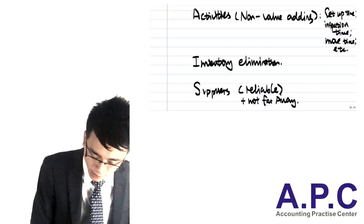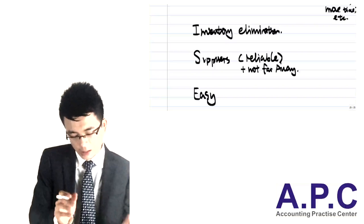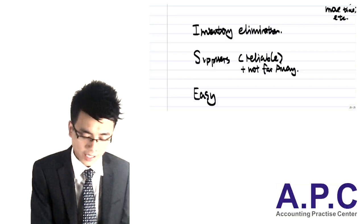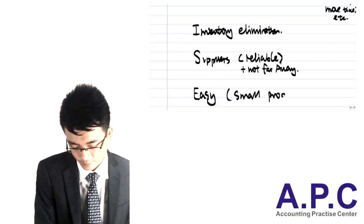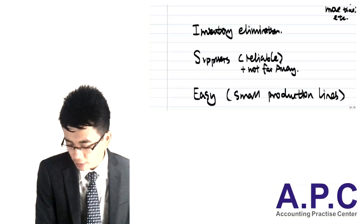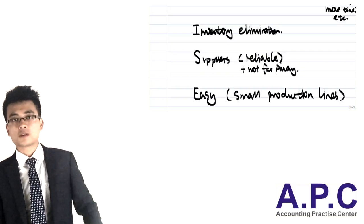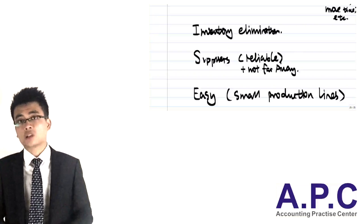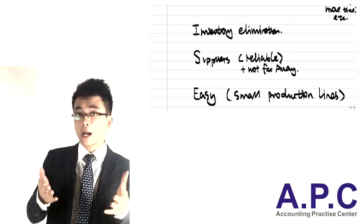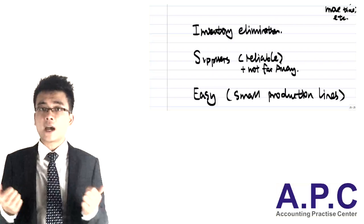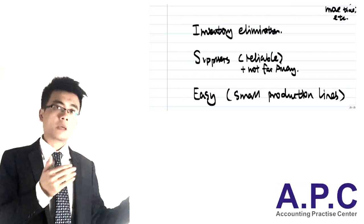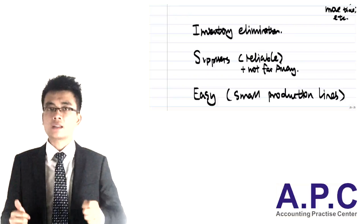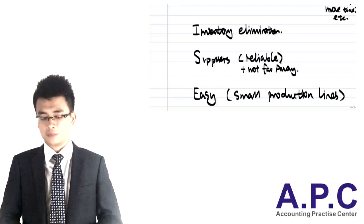E stands for easy — not meaning an easy product or easy manufacturing process, but rather what I refer to as a small production line. Instead of having thousands of products where you import raw materials from thousands of suppliers based in different countries, it's very hard to use JIT. But with a small production line — for example, at McDonald's you've got hamburgers and a small range — you can get those raw materials fairly quickly. With a small product line of maybe five or ten products, that's acceptable and there's no problem. Those are the elements for successfully implementing the JIT system within your organisation.